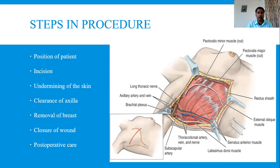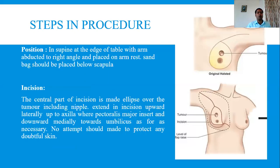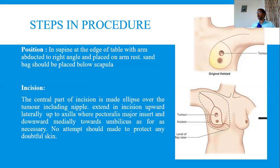The steps of the procedure are: incision, undermining of the skin, clearance of the axillary structures, removal of the breast tissue, closure of the wound, and post-operative care. For positioning, the patient is supine at the edge of the table with the arm abducted to a right angle and placed on an arm rest. A sandbag should be placed below the scapula to elevate and expose the affected side.